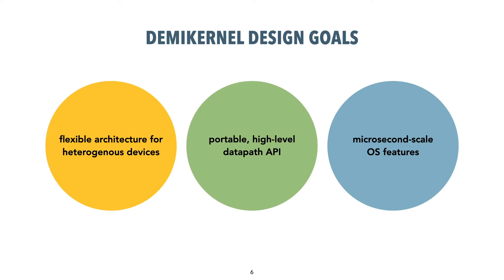So this is the big question we're trying to answer: what should a datapath OS look like? What API should it have? What features? And what architecture? DemiKernel is our attempt at an answer. We had three high-level goals. First, come up with a datapath architecture that accommodates different kernel bypass devices. Then we knew we needed a high-level, easy-to-use, and portable datapath API so that applications can run across these devices without code changes. Finally, microsecond-scale applications have different requirements, so we needed new OS features — for example, zero-copy I/O is really important for microsecond latencies, and DemiKernel needed to offer some kind of zero-copy memory coordination.